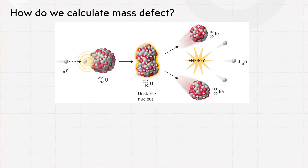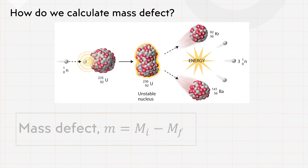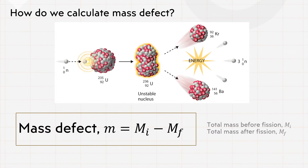So how do we calculate mass defect, relating to the nuclear fission process we just saw in this diagram? Mass defect m is the total mass before fission minus the total mass after fission, which is m equals to M_i minus M_f.